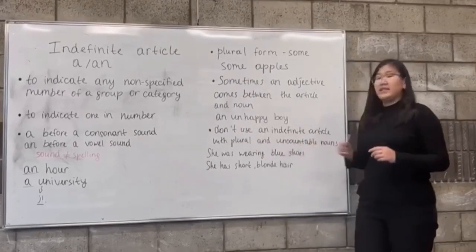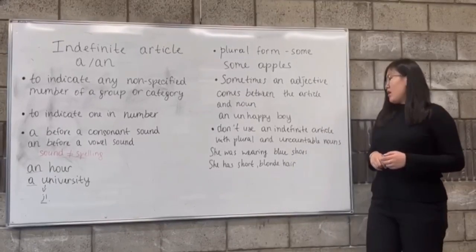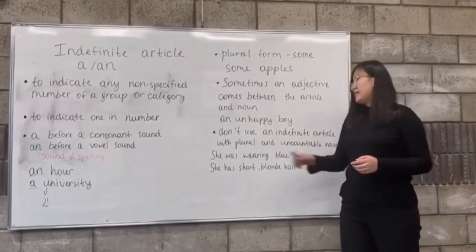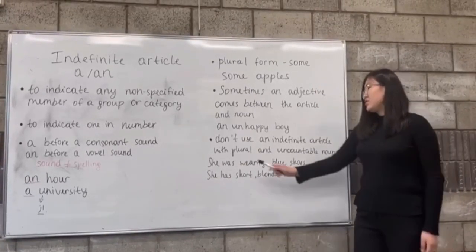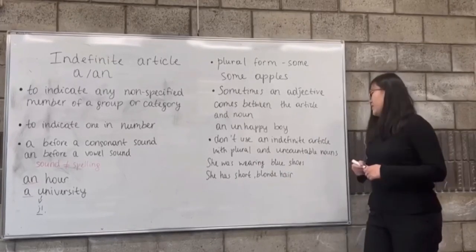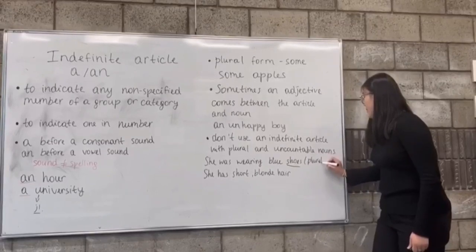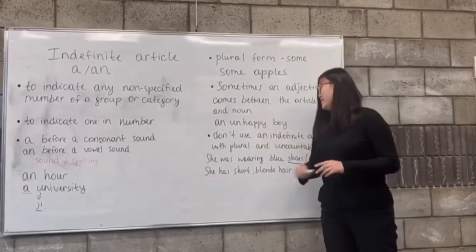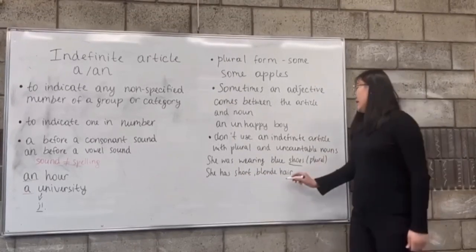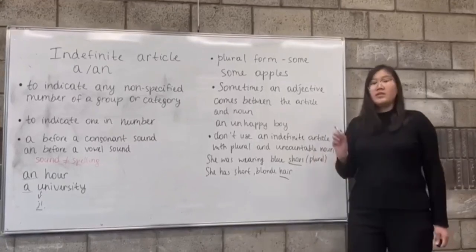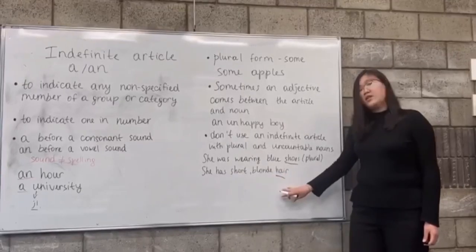And we don't use an indefinite article with plural and uncountable nouns. Here you can see examples. 'She was wearing blue shoes.' We cannot say 'a blue shoes' because 'shoes' is plural. And: 'She has short hair.' Hair is uncountable, so we cannot use 'a' before it. It is not correct.